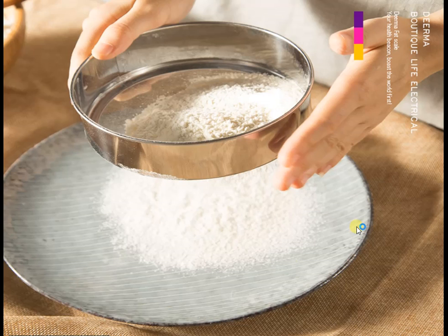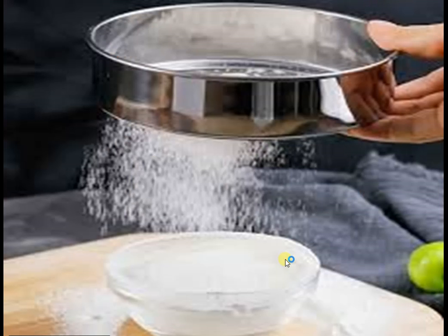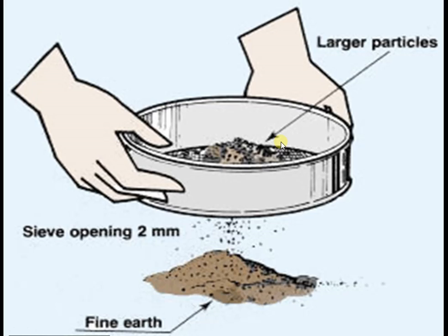You must have seen flour being sieved in the kitchen. The flour particles are very fine and pass through the holes of a sieve. But the husk particles which remain in the sieve, being large, are left on the sieve.